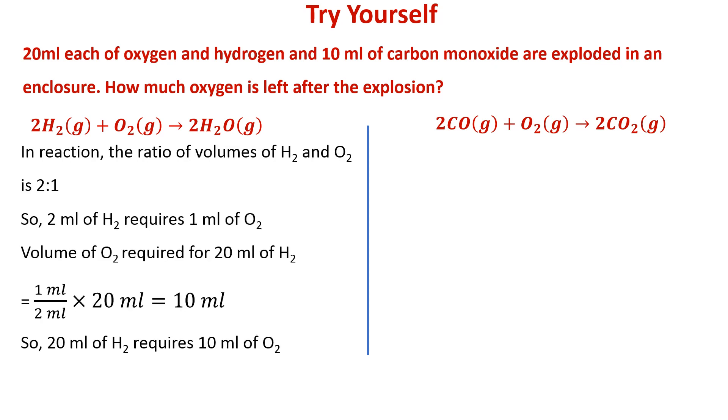Now in the first reaction, we can see that the ratio of volumes of H2 and O2 is 2 is to 1. So 2 ml of H2 requires 1 ml of O2. Volume of O2 required for 20 ml of H2 will be 1 ml upon 2 ml into 20 ml. That gives 10 ml. So 20 ml of H2 requires 10 ml of O2.